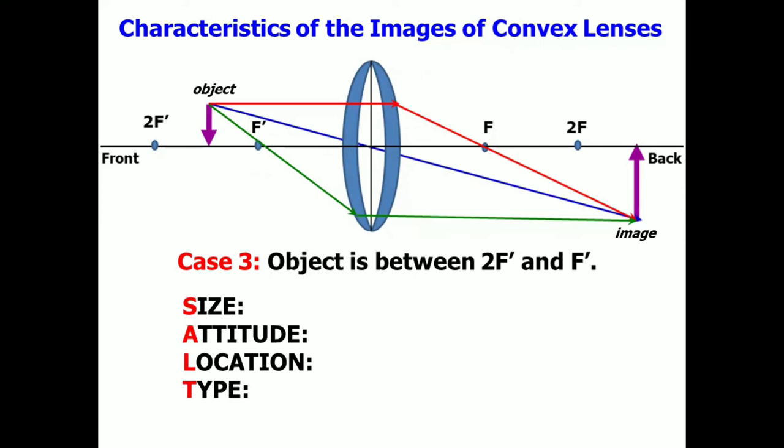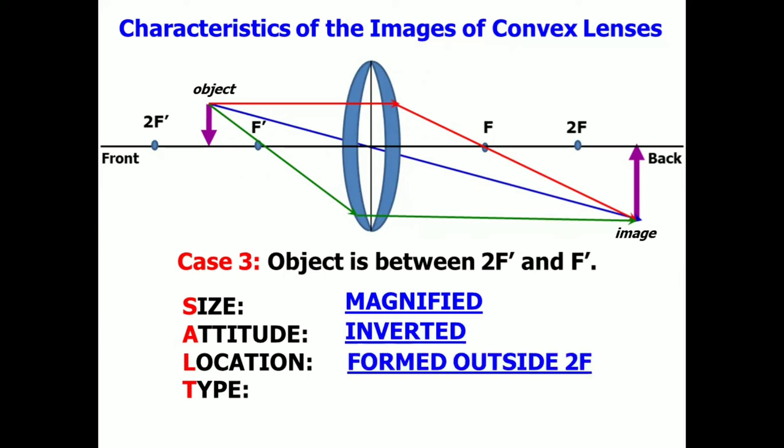For the size, as you see, it is magnified. The attitude or orientation, it is inverted. Its location is formed outside 2F. And lastly, its type, since it is inverted, it is a real image.